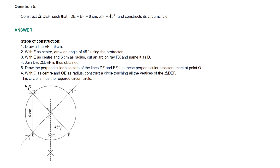Now coming to question number 5. First, construct triangle DEF where DE is equal to EF is equal to 6 cm and measure of angle F is equal to 45 degrees. Then, because we need to construct its circumcircle, draw the perpendicular bisectors of sides DE and EF — it is enough to draw for any two sides. Let these perpendicular bisectors meet at point O. With O as center and OE as radius, construct a circle touching all the vertices of triangle DEF. This circle is the required circumcircle.